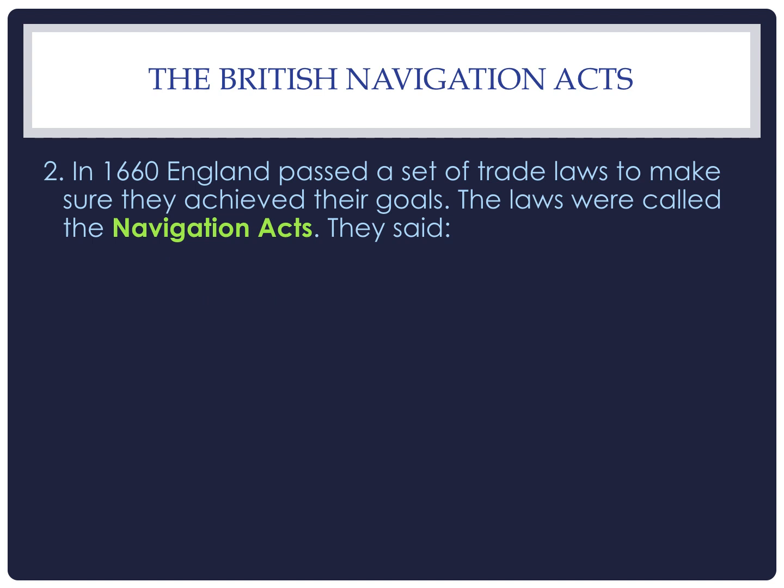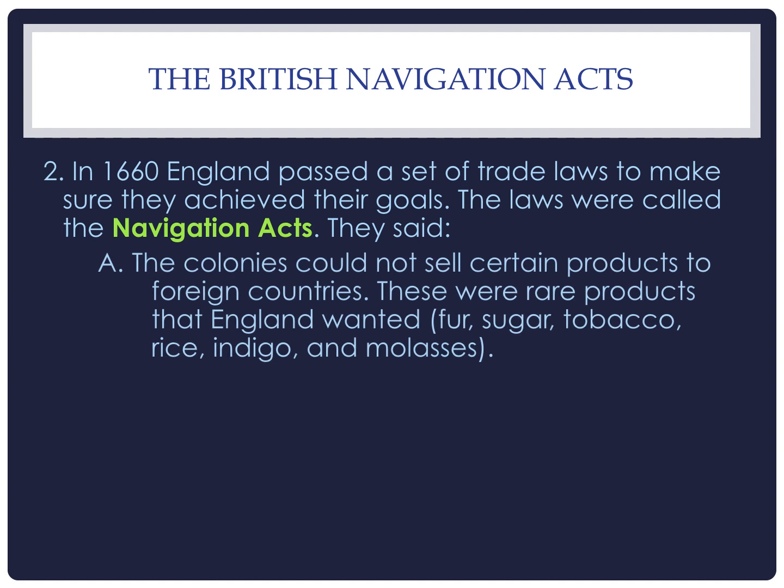The Navigation Acts themselves were passed in 1660. It's not just one law — it's really a set of trade laws grouped together as the Navigation Acts. They're put together to make sure that the British trading system achieved their goals of getting raw materials cheaply and easily and making sure they had a market to sell finished goods. The Navigation laws put into policy that colonists could not sell certain products to foreign countries — raw materials England wanted for themselves: fur, sugar, tobacco, rice, indigo, and molasses. If you produced them as a colonist, you had to sell them back to England and not to foreign merchants or foreign governments.